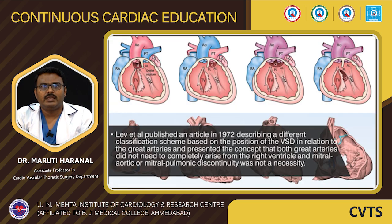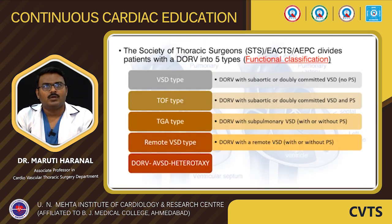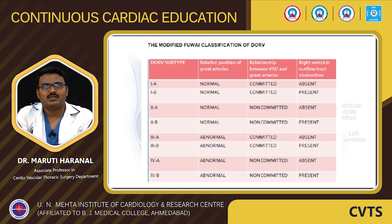Coming to the classification: Lev et al. published an article in 1972 describing a classification scheme based on the position of the VSD in relation to the great arteries, presenting the concept that both great arteries did not need to completely arise from the right ventricle, and mitral-aortic or mitral-pulmonary discontinuity was not a necessary parameter. The Society of Thoracic Surgeons divides patients with DORV into five types: VSD type, TOF type, TGA type, remote VSD, DORV associated with AVCD, and heterotaxic syndrome. The modified Foker classification is mainly a surgical classification, to be reviewed when considering surgical management.